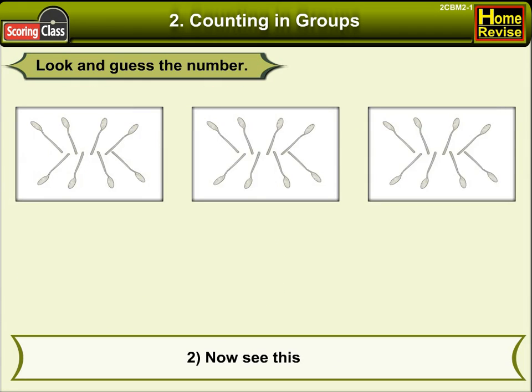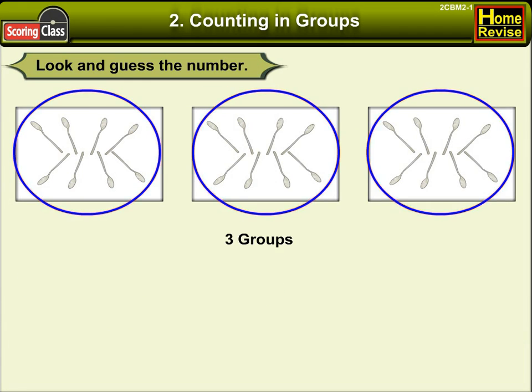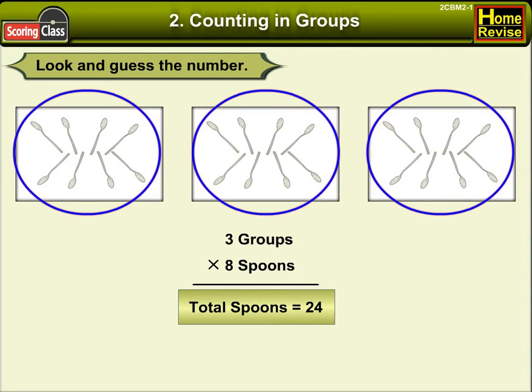Number 2. Now see this — there are 3 groups of spoons, and in one group there are 8 spoons. So the total number of spoons is 24.